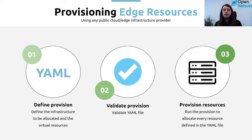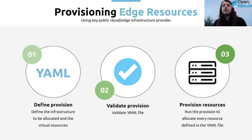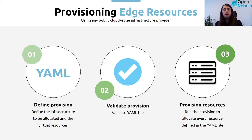This is a three-step process to have an edge cluster up and running in your OpenNebula installation. First, you need a YAML definition file that defines the infrastructure with all the resources to be allocated at the provider. Then OpenNebula validates this YAML to confirm all resources are in place and can be deployed. Finally, OpenNebula provisions the resources — communicating with the provider to create them, then using Ansible to configure the resources, installing all the software OpenNebula needs to deploy virtual machines.